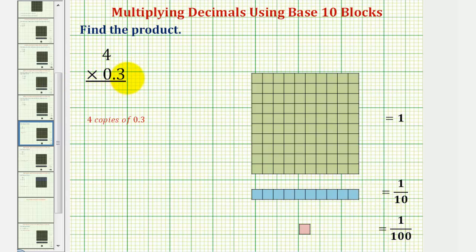So because we have four times three tenths, this means we want four sets, or four copies, of three tenths. Notice to model three tenths, we would use three longs, because each long equals one tenth.